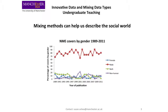The second graph you see here is a line chart, and this is another way of representing what we saw in the cross-sectional data from the bar chart. This shows the distribution of gender over the time period 1989 to 2011, and we can see if there have been any changes in the distribution of gender over this particular time period.